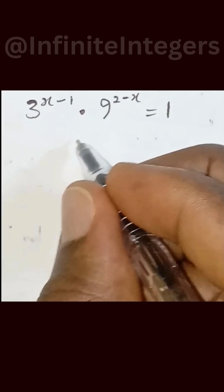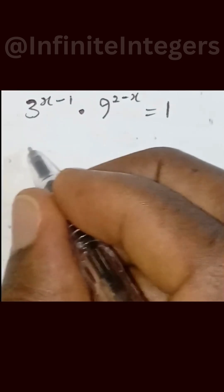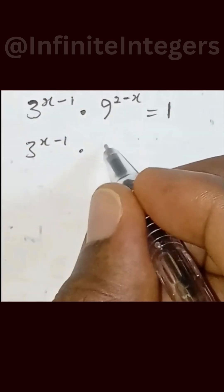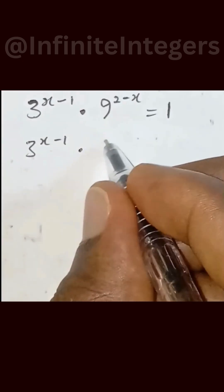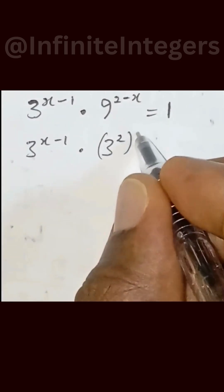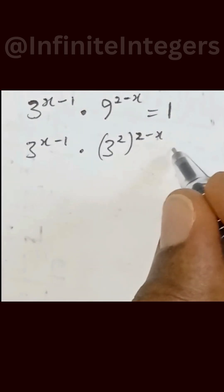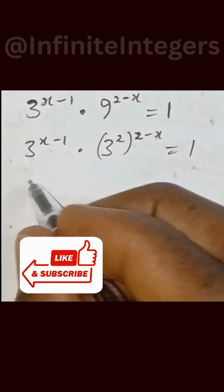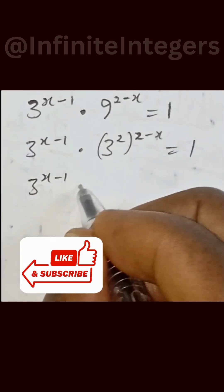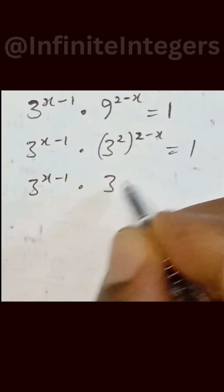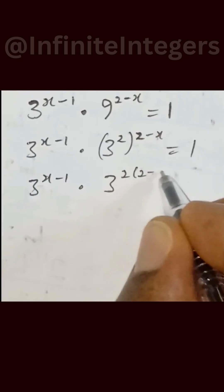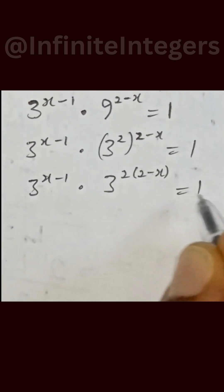We want to find the value of x. We have 3 raised to the power x minus 1, multiplied by — we simplify this to be 3 raised to the power 2 into bracket 2 minus x — equal to 1. This gives us 3 raised to the power x minus 1 multiplied by 3 raised to the power 2 into bracket 2 minus x equal to 1.